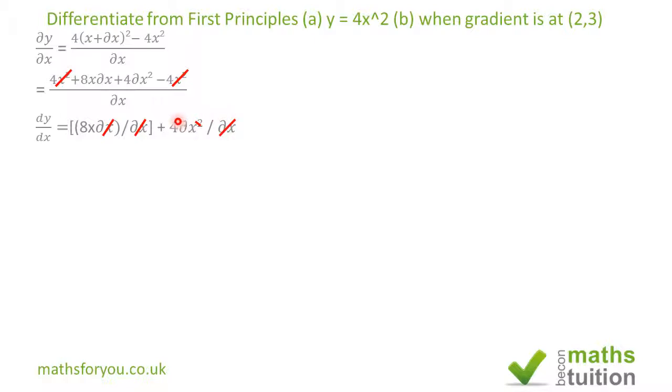Now 4 Delta X is so small that we can afford to ignore it, so our answer becomes 8x as Delta X tends to 0.